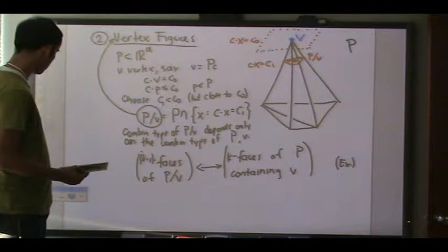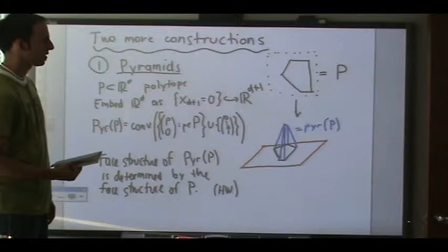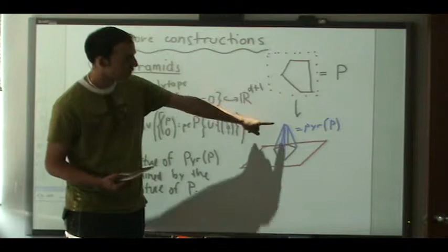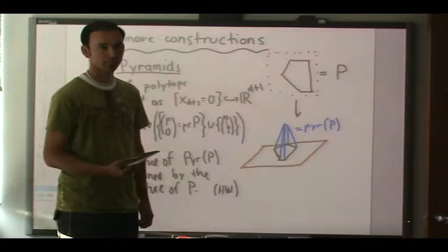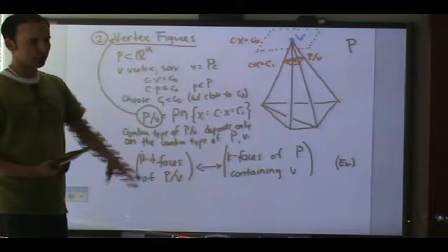One thing to realize: if you take a pyramid and take the vertex figure with respect to the special vertex, you get p back. So in a sense, vertex figures are like an un-pyramid construction.